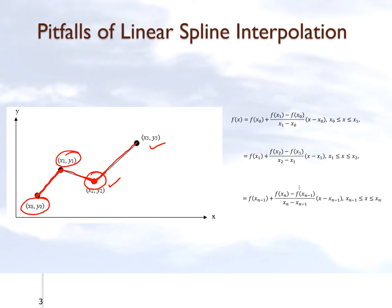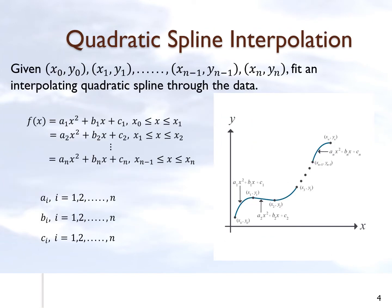In this particular segment, we are only going to talk about quadratic spline interpolation. So you have n+1 data points given to you and what you want to do is fit an interpolating quadratic spline through the data. That simply means you're going to have n quadratics going through these n+1 data points.